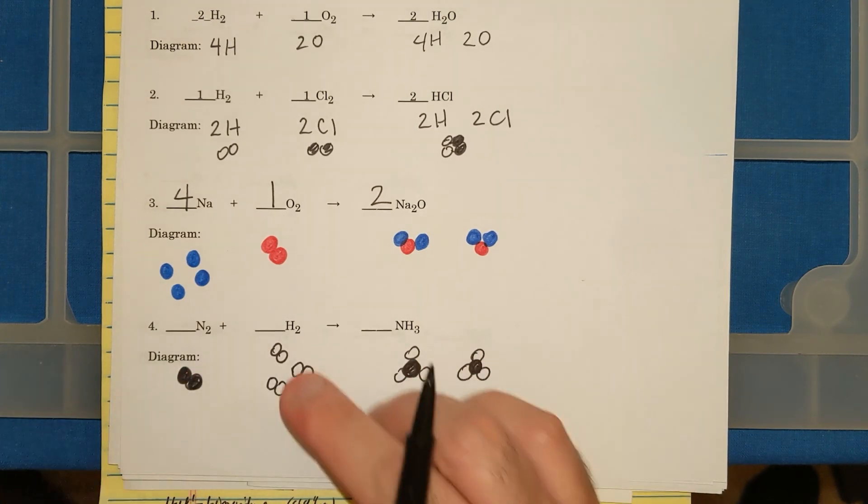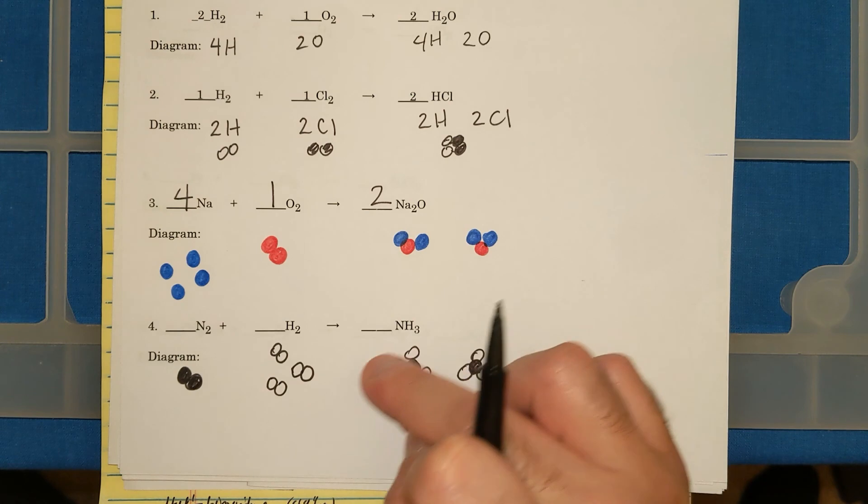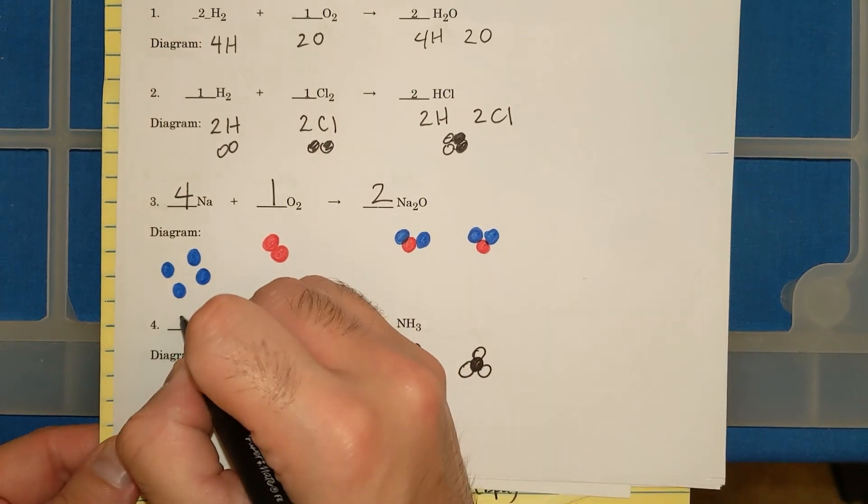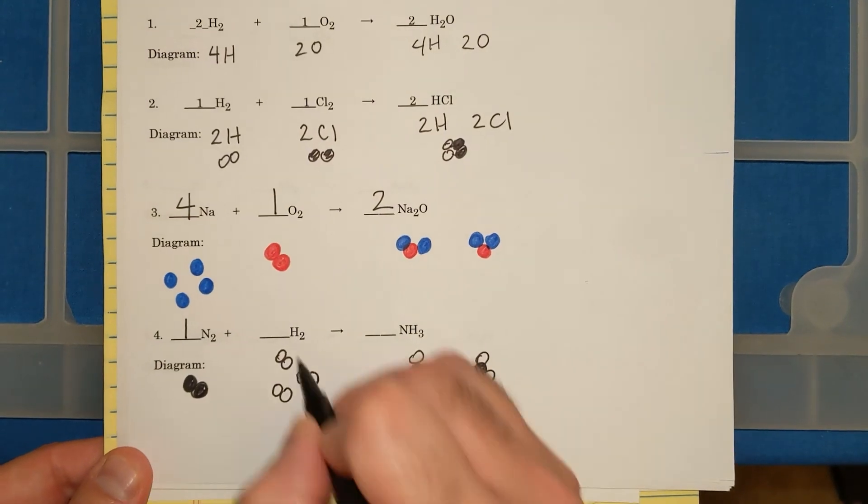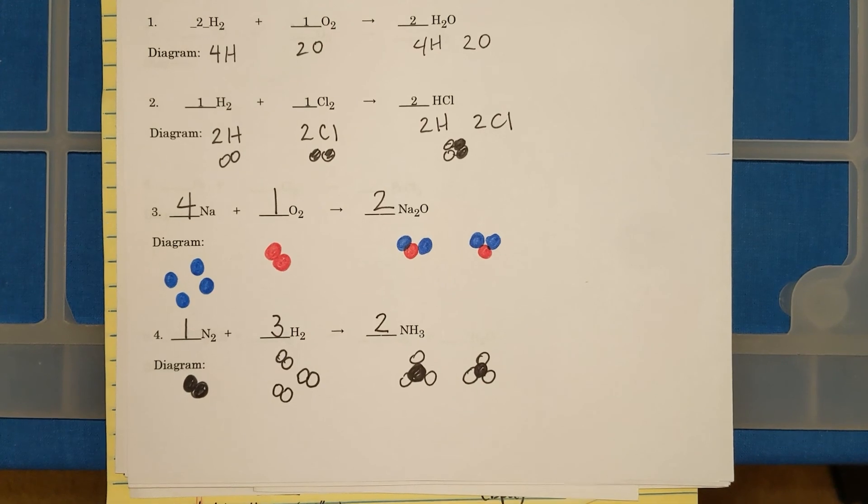I have 2 N's, 2 N's. I have 1, 2, 3, 4, 5, 6 H's, 1, 2, 3, 4, 5, 6 H's. Let me put my coefficients in. This required 1 N2, 3 H2, and 2 NH3s.